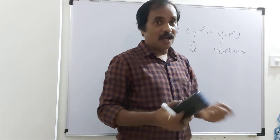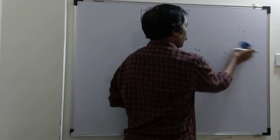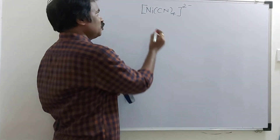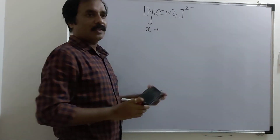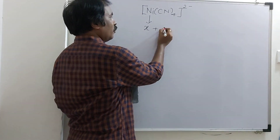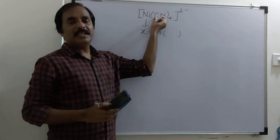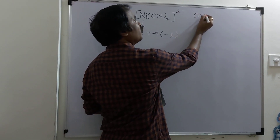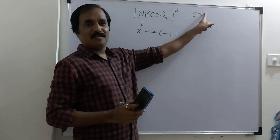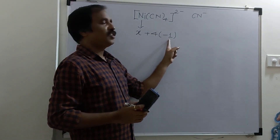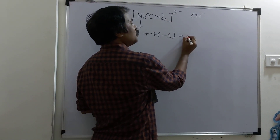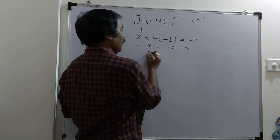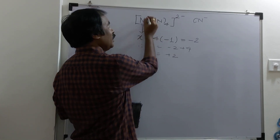So we will see how. Step number 1: we must know the oxidation number of the metal. Here the metal is nickel. Consider x is the oxidation number of nickel. There are 4 ligands. CN⁻ carries a −1 charge. Total ligands are 4, so 4 × (−1) = −4. The total charge on the complex is −2. Therefore x + (−4) = −2, so x = +2. The oxidation number of nickel is +2.